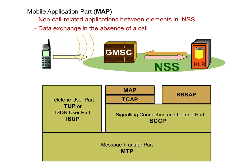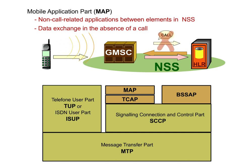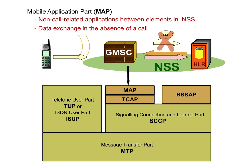Thus, there is no data exchange between the GMSC and the HLR without the actual call being routed to the HLR. In such cases, the network relies on MAP, which is used for signaling communication between NSS elements.